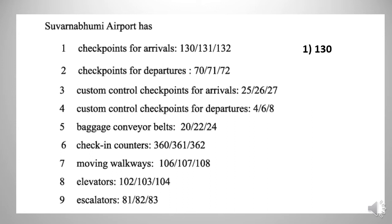Exercise number 2: checkpoints for departures. The options are 70, 71, and 72. The correct answer is 72 checkpoints for departures. Exercise number 3: customs control checkpoints for arrivals. The options are 25, 26, and 27. The correct answer is 26.